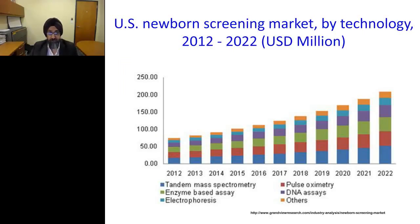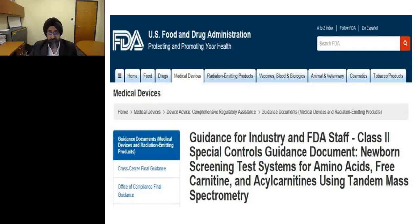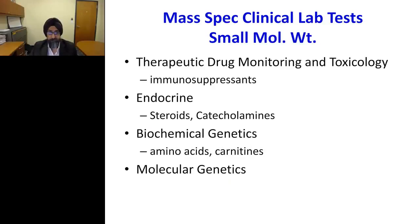LC-MS/MS use is increasing over time, particularly in newborn screening, but also in other clinical specialties. FDA proactively has provided guidance to the industry, with an example being a Class II special control guidance document for newborn screening test systems for amino acids, acylcarnitines, and acylcarnitine using tandem mass spectrometry. Mass spectrometry is not only used for biochemical genetics or inborn errors of metabolism, but also for steroids, catecholamines, and molecular genetics.